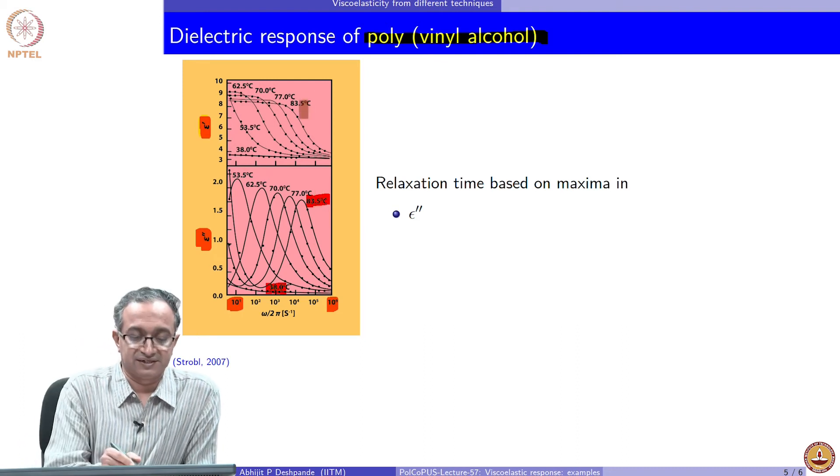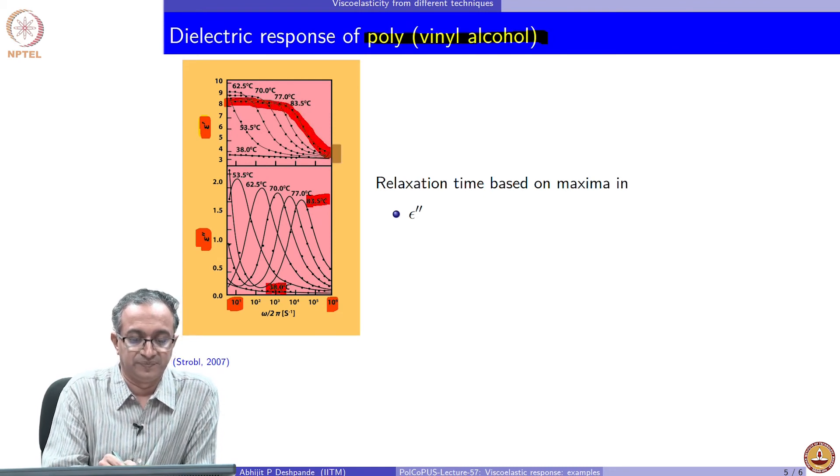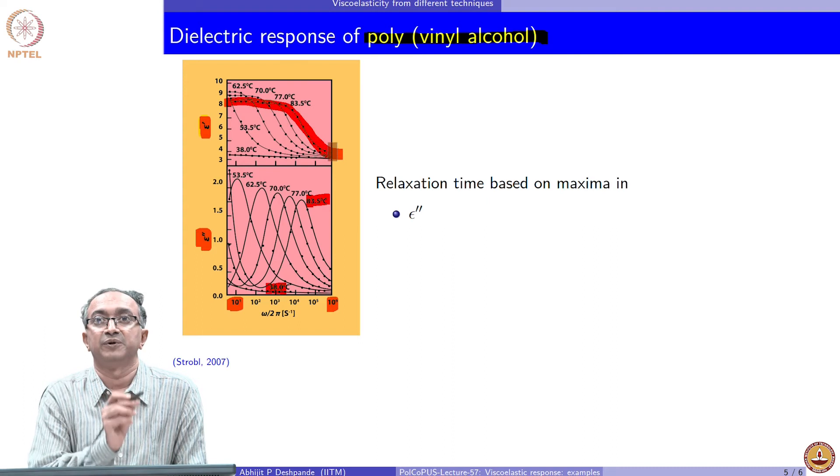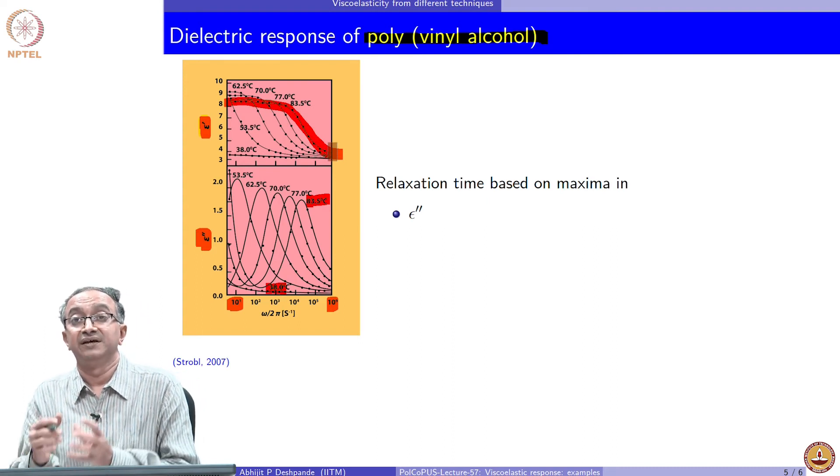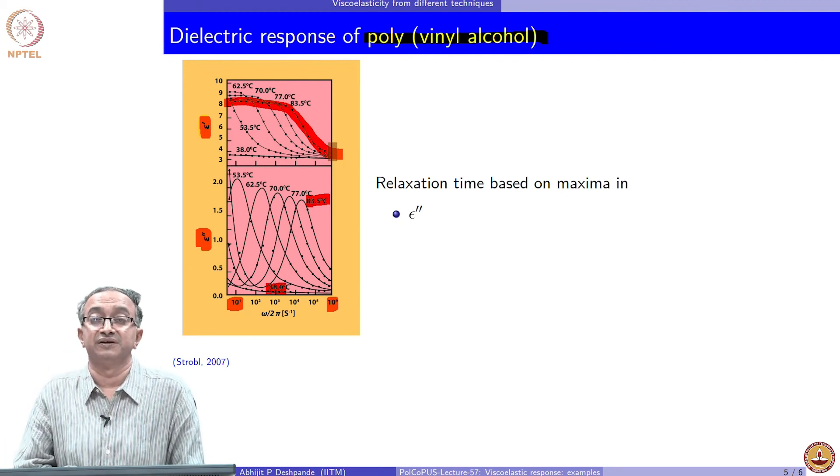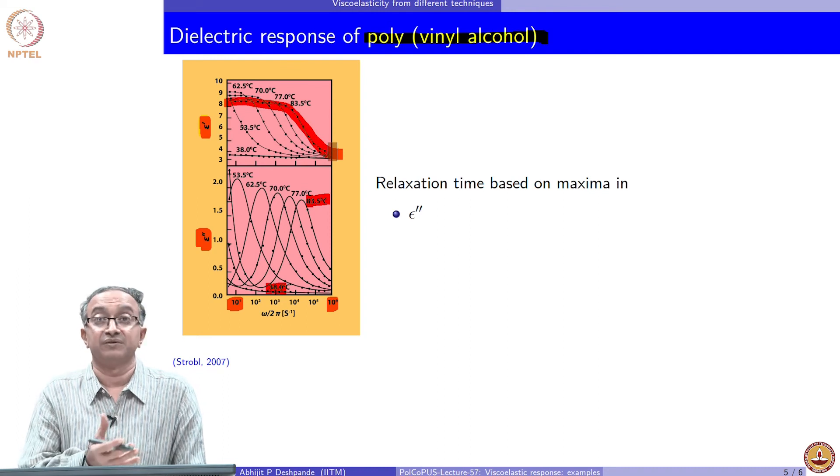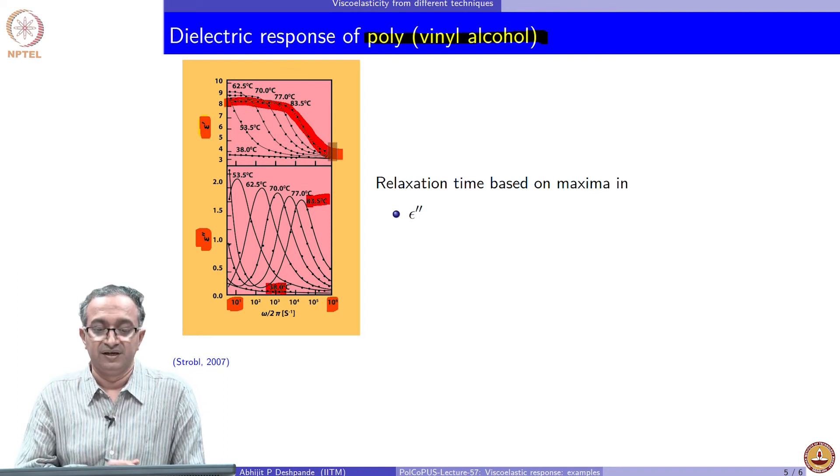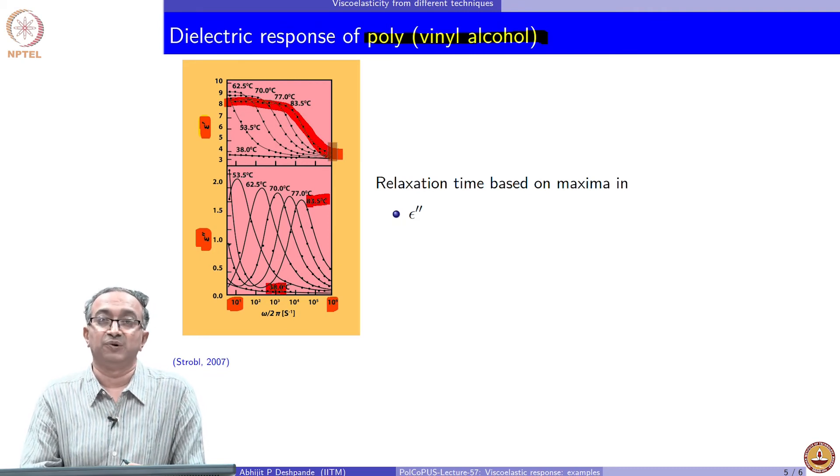And so what you can see is at higher temperature, you can clearly see this Debye like response. A permittivity which is roughly constant and then because of segmental mobility remains frozen, because very high frequency is being used for the electric stimulus. In this case, the dipoles cannot orient.